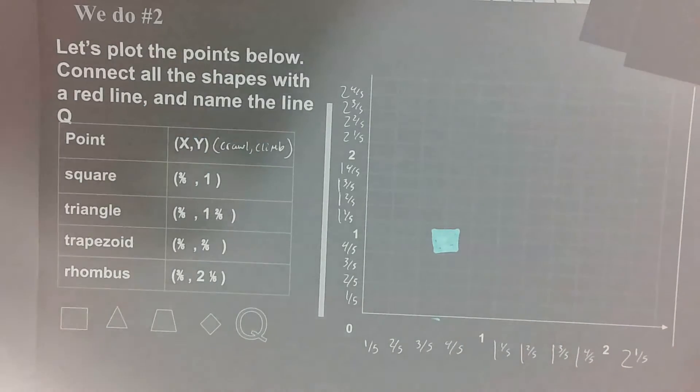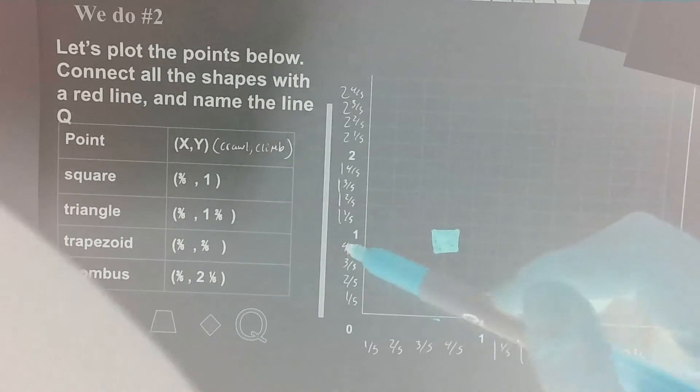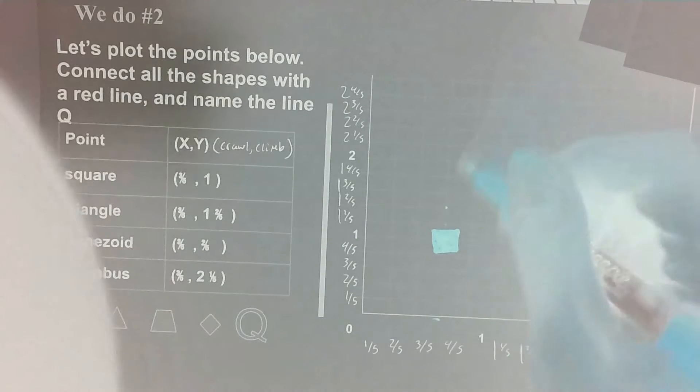Let's plot the triangle together and then you can plot the trapezoid and rhombus on your own. Triangle also has a crawl of three fifths, but a climb of one and two fifths. And drag or draw a triangle right there.